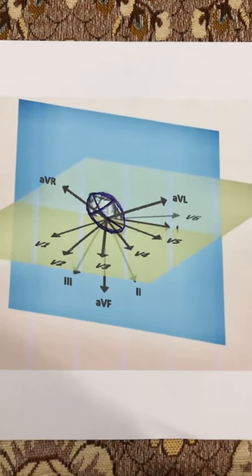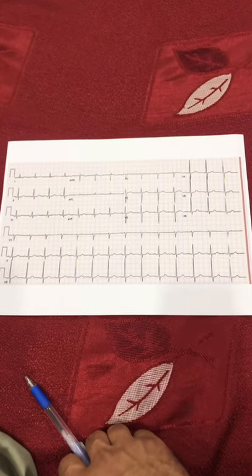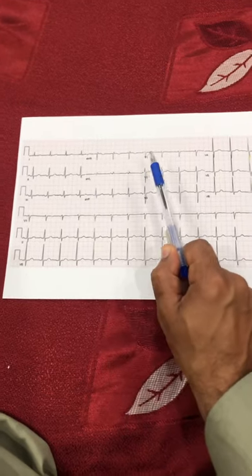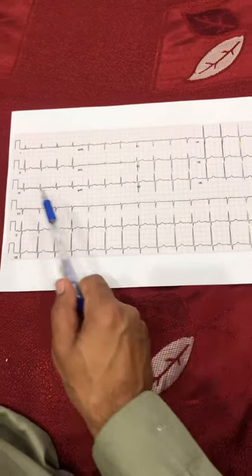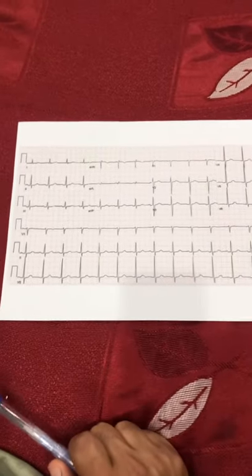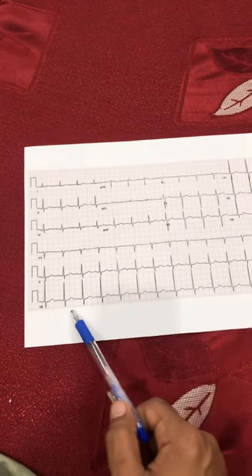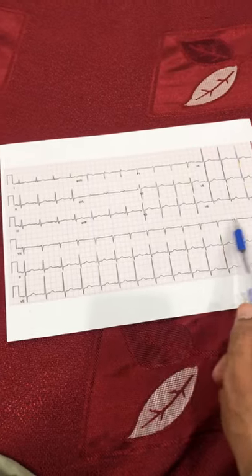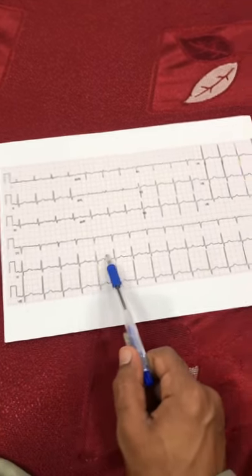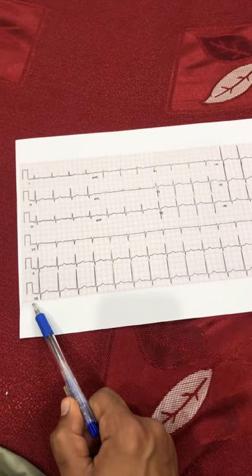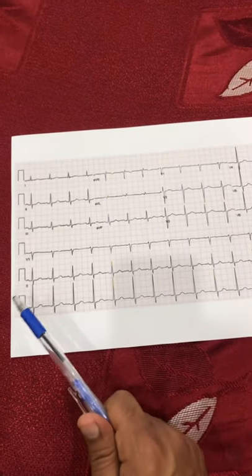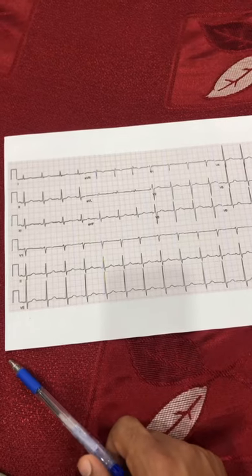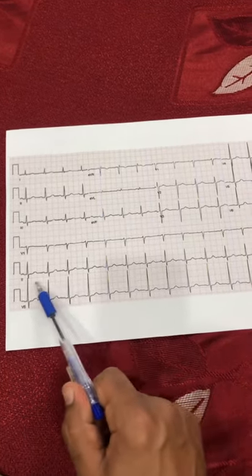Now it's time to show the normal ECG waveform. It consists of 12 leads altogether: I, II, III, aVR, aVL, aVF, V1, V2, V3, V4, V5, and V6. These three strips together make up 12 leads. The lower three long strips are not discussed separately, as they are extended forms of the leads above. We take the full V1 strip, the full Lead II strip, and the V5 strip for specific purposes — for example, Lead II is used to find the heart rate and rhythm of the heart.